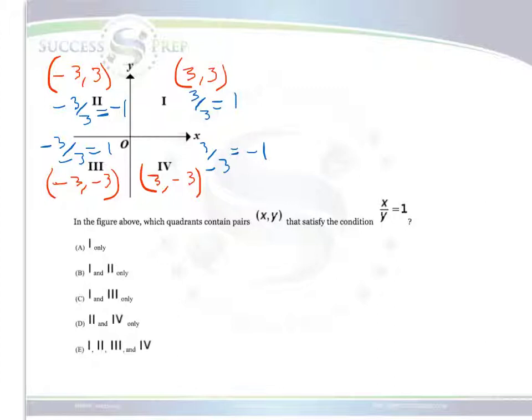Looking at all these values, we just need to pick which ones give us a value of 1. That only happens in quadrant 1 and quadrant 3. So the answer is C, which is I and III only. Thank you.